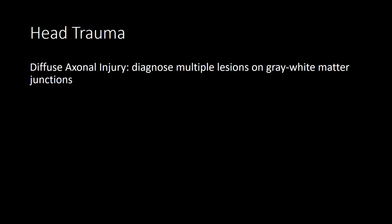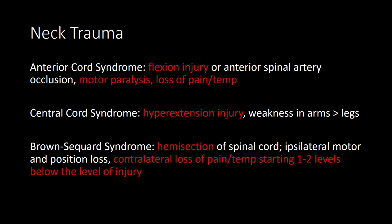Diffuse axonal injury can be seen following severe head trauma, mostly in comatose patients. The duration of coma correlates to severity, and you diagnose it with CT head showing multiple lesions at gray-white matter junctions. Concussions are transient alterations in mental status after head trauma — they lack focal neurological findings. The most common abnormality on CT in an elderly patient with head trauma is a cerebral contusion.